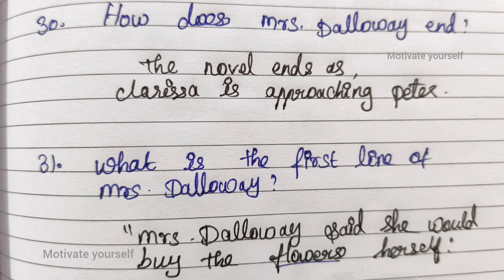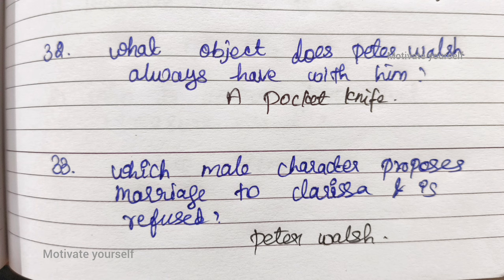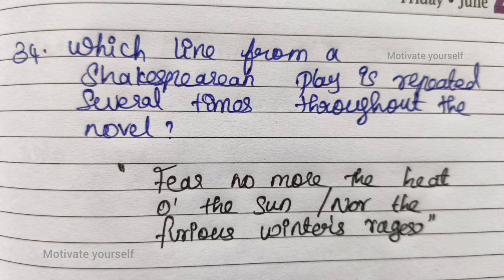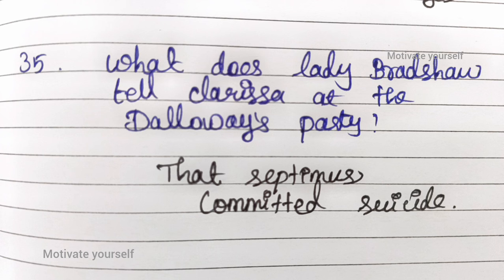Thirtieth question: How does Mrs. Dalloway end? The novel ends as Clarissa is approaching Peter. Thirty-one: What is the first line of Mrs. Dalloway? 'Mrs. Dalloway said she would buy the flowers herself.' Thirty-two: What object does Peter Walsh always have with him? A pocket knife. Thirty-three: Which male character proposes marriage to Clarissa and is refused? Peter Walsh. Thirty-four: Which line from a Shakespearean play is repeated several times throughout the novel? 'Fear no more the heat o' the sun, nor the furious winter's rage.' Thirty-five: What does Lady Bradshaw tell Clarissa at the Dalloway party? That Septimus committed suicide.